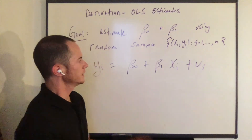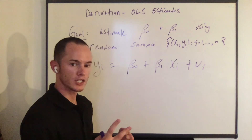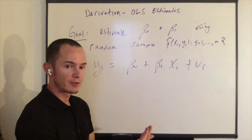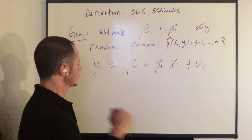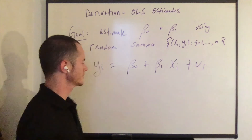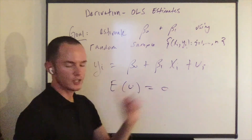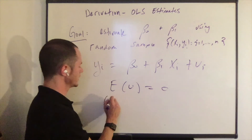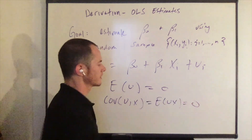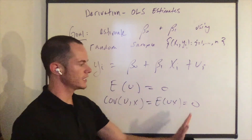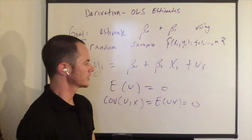So let's derive these estimates using that sample data. We're going to start with two population moments, replace those population moments with our sample counterparts, and choose the values for those parameters that solve those equations. The population moments we're going to use are equations five and six from the last video. Equation five: the expected value of u equals zero. Equation six implies that the covariance between u and x — which is the expected value of u times x — equals zero. We're going to use these two population moments and solve for the parameters.